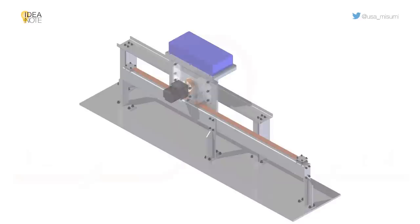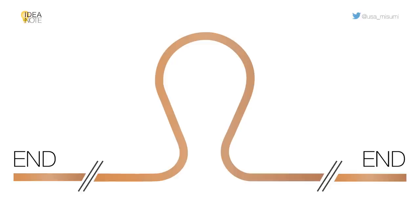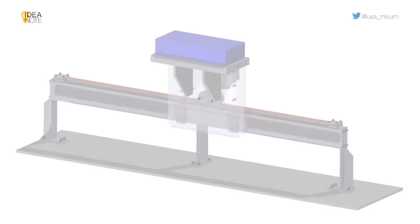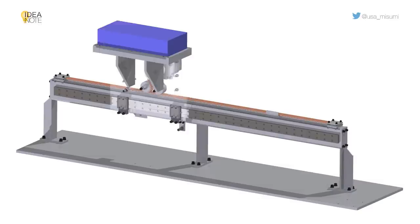One benefit to this method is using an open-loop belt less than half the total length of the conventional closed counterpart. A dual-block linear guide can be used to help support the carriage from twisting due to moment load.